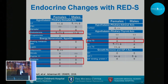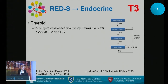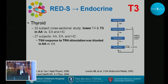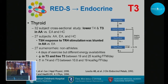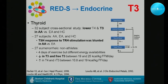Regarding the thyroid: a cross-sectional study of 32 subjects found lower T4 and T3 in amenorrheic athletes versus eumenorrheic athletes and healthy controls. In another study of 27 subjects, the TSH response to thyroid-releasing hormone stimulation was blunted in amenorrheic athletes. A further study found a decrease in T3 and free T3 at energy availability between 19–25 kcal/kg FFM, and an increase in T4 and reverse T3 at even lower levels — resembling sick thyroid syndrome. The most consistently abnormal marker across all thyroid studies is T3.